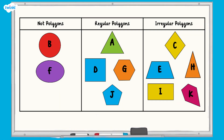How did you get on? Shape D, a square, shape G, a hexagon, and shape J, a pentagon, are all examples of regular polygons. Shape E, a trapezium, shape H, an isosceles triangle, shape I, a rectangle, and shape K, a pentagon, are all examples of irregular polygons.